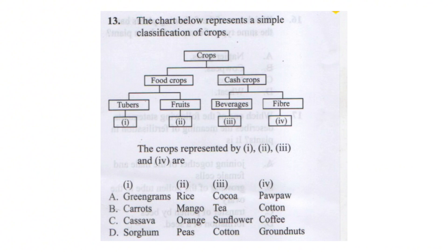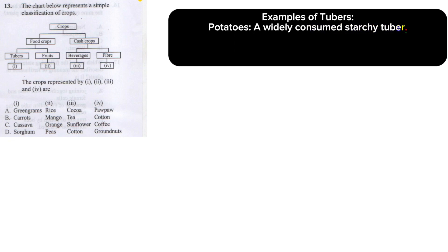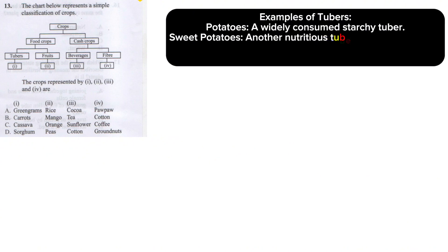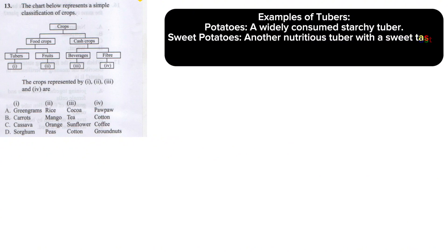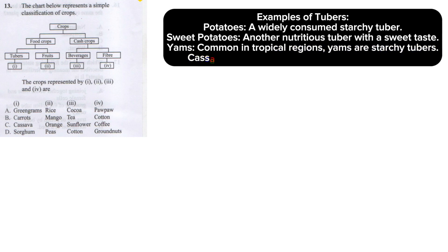You're supposed to check which crops fit into Roman numerals one, two, three, and four. Let's talk about examples of tubers: we have potatoes, which are widely consumed; sweet potatoes, another nutritious tuber with a sweet taste; yams, common in tropical regions and starchy; and cassava, a tropical tuber used for its starchy roots.